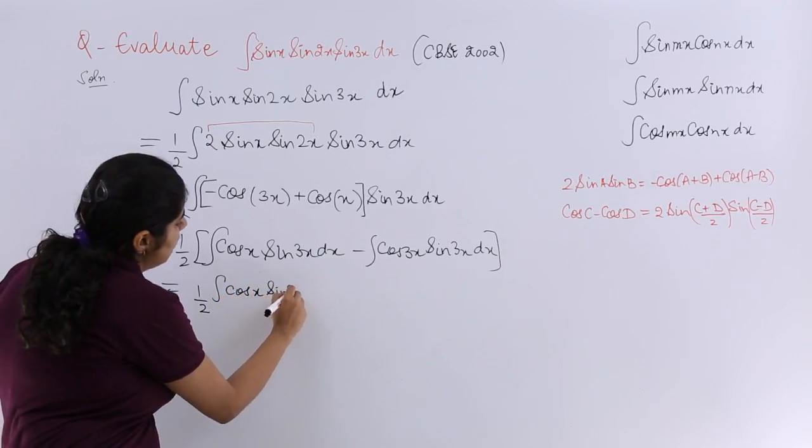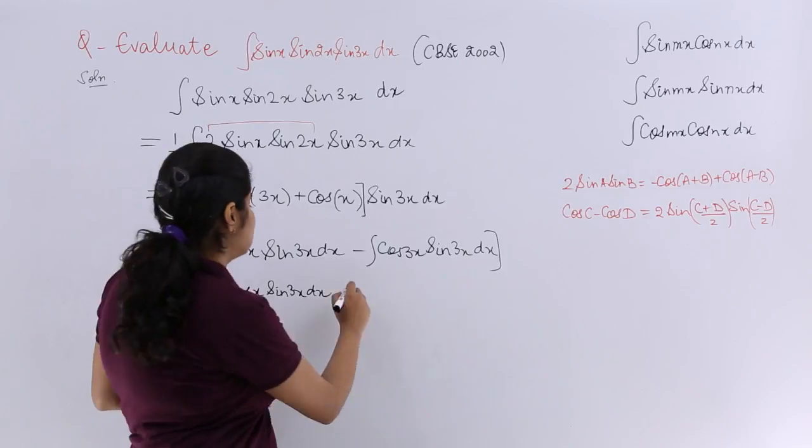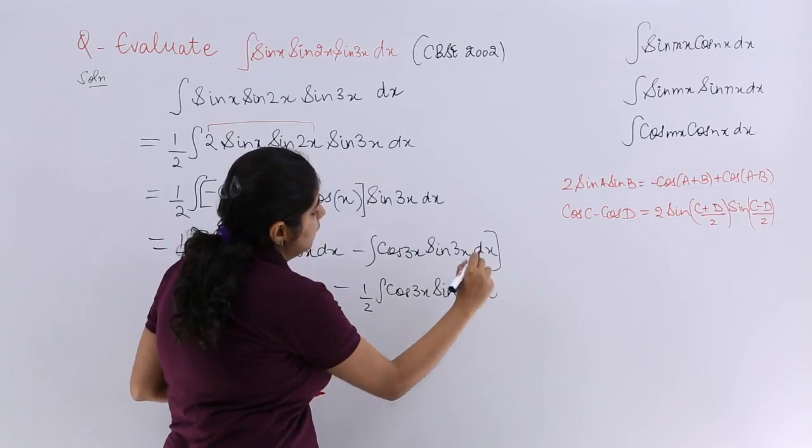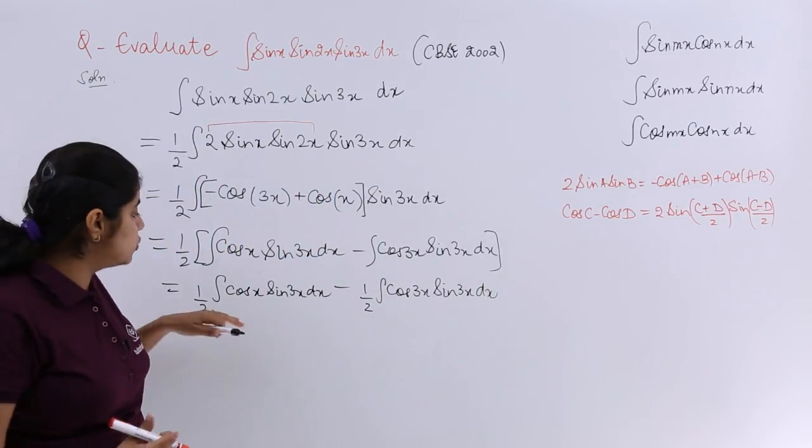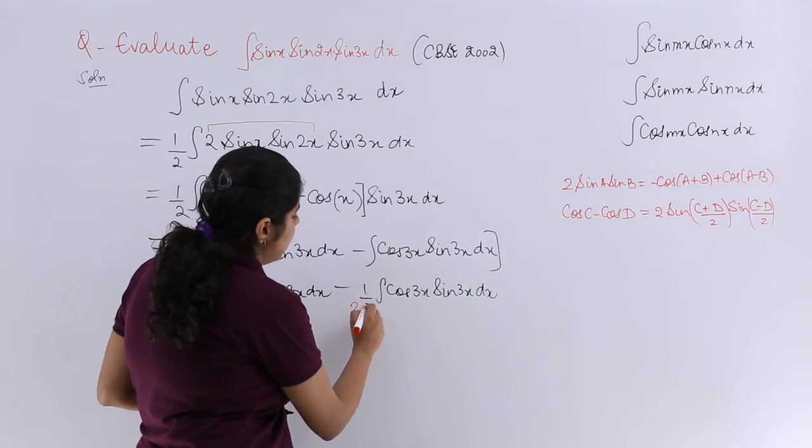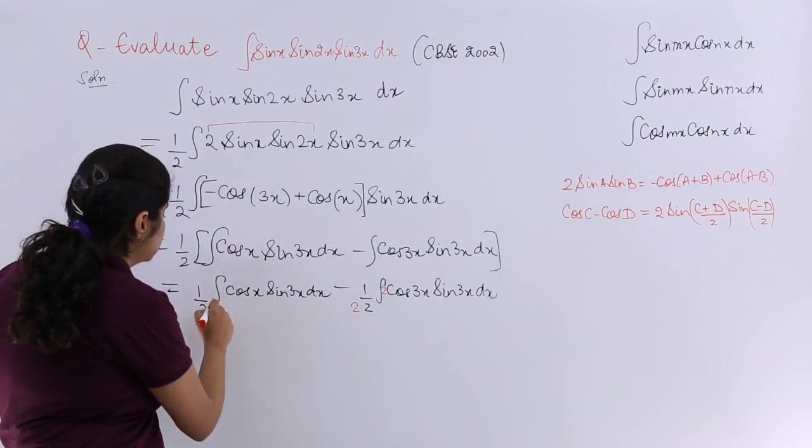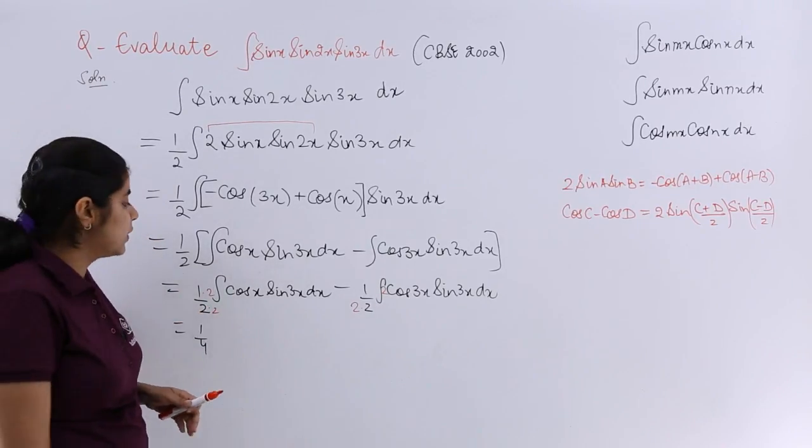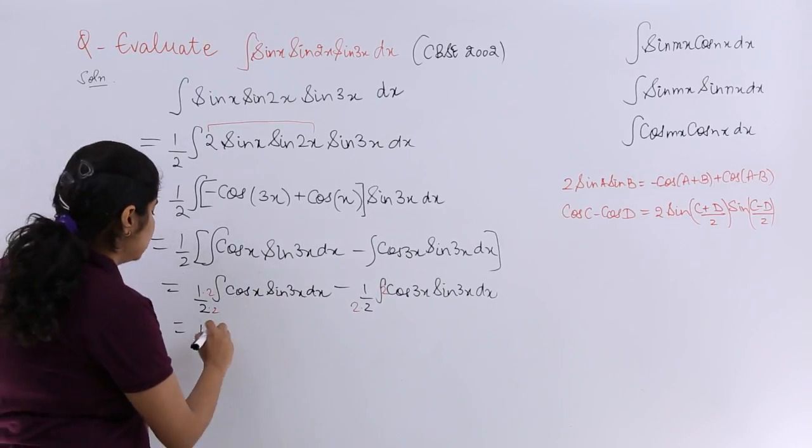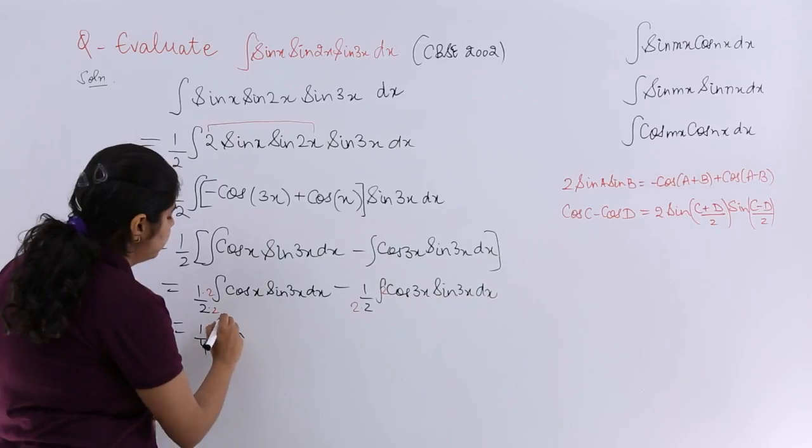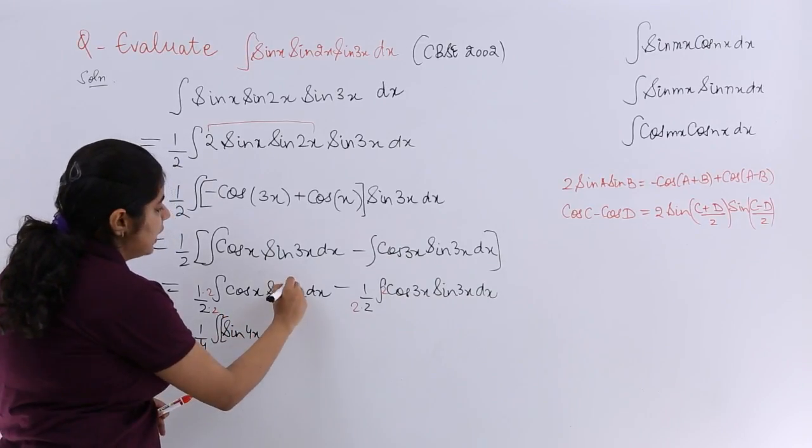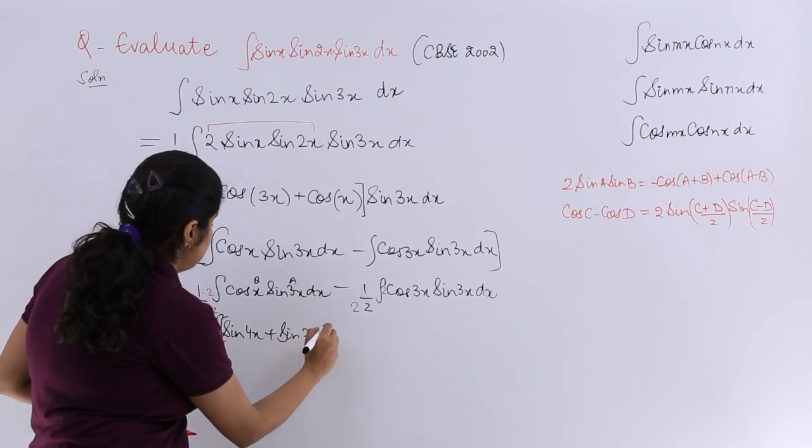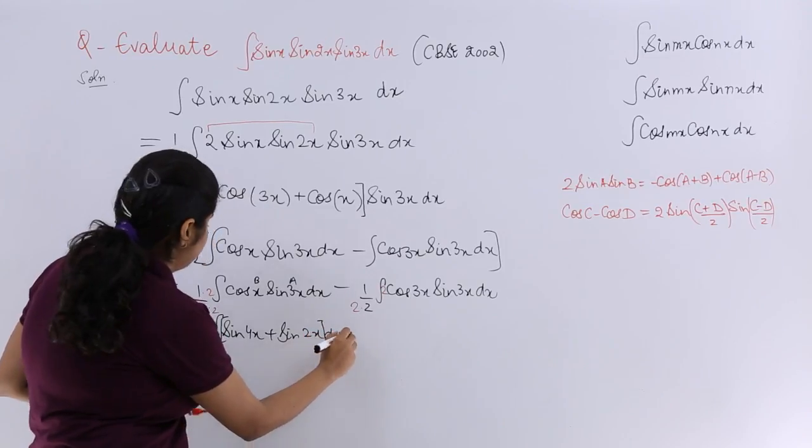Now what you can do is again I need to repeat by applying the formulas. Divide by 2 here also, divide by 2 multiply by 2. What will happen? It will be 1 by 4 over here in the denominator. Then 2 sin A cos B formula I have to apply. It is nothing but sin(A plus B). If I consider this as A, this as B, plus sin(A minus B). So we have something like this in the integral.